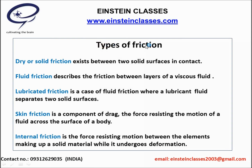Now we are discussing the types of friction. There are different types of friction. One is basically dry or solid friction, which exists when two solid surfaces in contact have relative motion or a tendency of relative motion. In this chapter we will discuss dry friction or solid friction in detail.